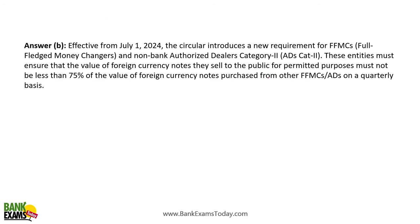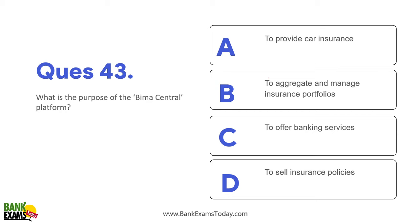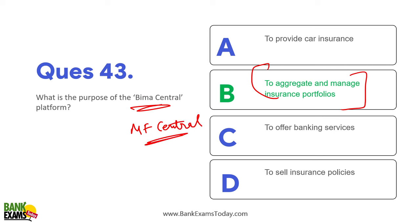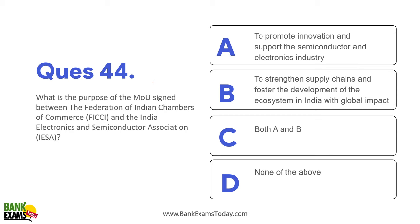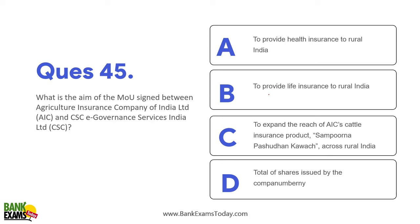What is the purpose of the BIMA Central platform? To aggregate and manage insurance portfolios. BIMA Central is similar to MF Central — where all mutual fund portfolios are managed — but BIMA Central is for insurance. What is the purpose of the MOU signed between FICCI and IESA? To promote innovation and support the semiconductor and electronic industry, strengthen the supply chain, and foster ecosystem development in India with global impact. What is the aim of the MOU signed between the Agriculture Insurance Company of India and CSC e-Governance Services India Limited? To expand the reach of the cattle insurance product — Sampurna Pashudhan Kavach — across India.